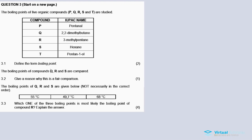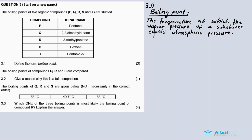Now 3.1: Define the term boiling point. The definition for boiling point is the temperature at which the vapor pressure of a substance equals the atmospheric pressure. So whenever a substance boils, the vapor pressure - the pressure coming from that substance or being released by the substance - needs to be equal to the atmospheric pressure.